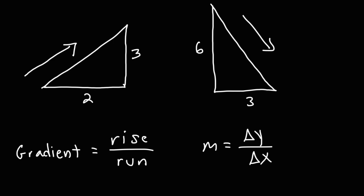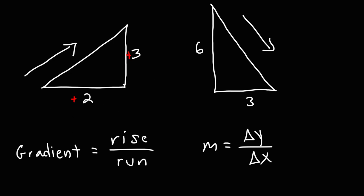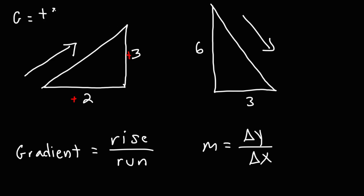To calculate the gradient for the first triangle on the left, we have a rise of positive 3 and a run of positive 2, because we're going up along the y-axis and towards the right along the x-axis. So the gradient is 3 over 2.